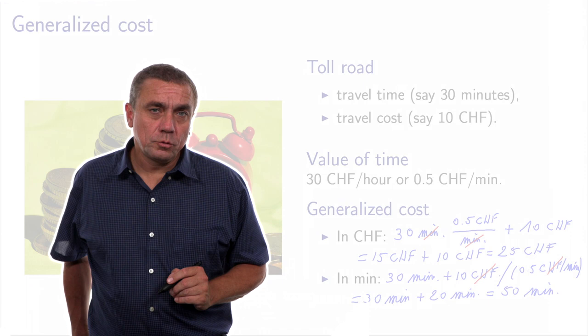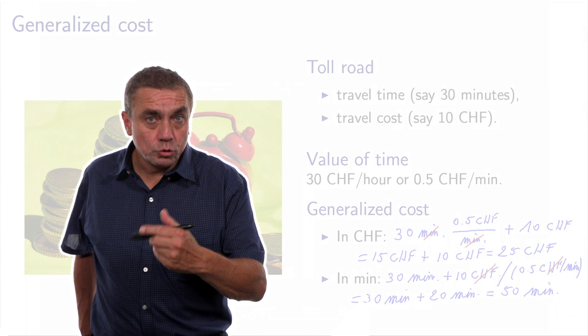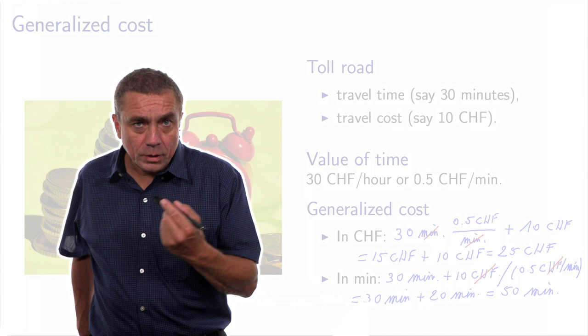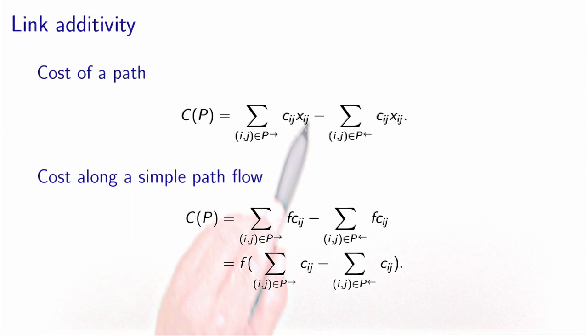When dealing with cost, you must ensure the cost includes all components of the real cost in your model, expressed in a common unit that is the same across the network. The other assumption is that cost is link additive: the cost of a path is the sum of costs on forward arcs minus the sum on backward arcs, which equals the flow times the sum of arc costs along the path.